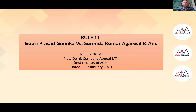Rule 11 is used when the bench thinks there is justice in a decision but there is no provision for that particular justice to be delivered. Initially, many CIRP orders were withdrawn under Rule 11 only to meet the ends of justice and to prevent abuse of the process of the tribunal. That was the initial trend. Thereafter, Section 12A was inserted.